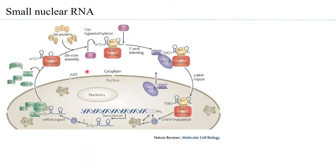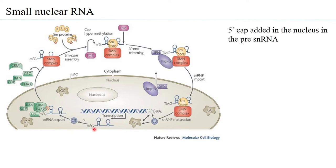Looking at the entire biogenesis of small nuclear RNA: within the nucleus, the gene for the snRNA is transcribed by RNA polymerase 2 if it is of the Sm class, or by RNA polymerase 3 if it is the LSM class. Once the pre-snRNA is formed, the 5' end is capped in the same manner as mRNA, with a 7-methylguanosine cap. This 5' cap addition is done within the nucleus itself.